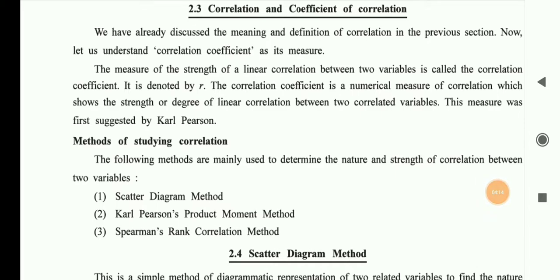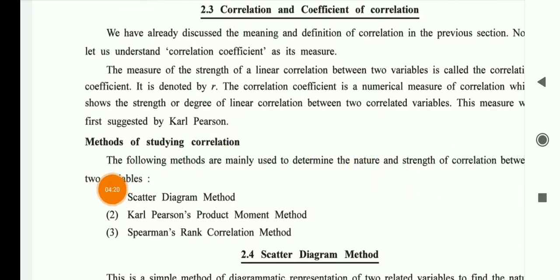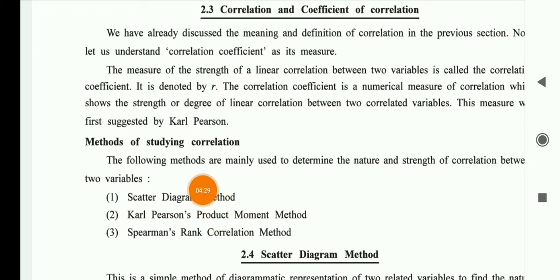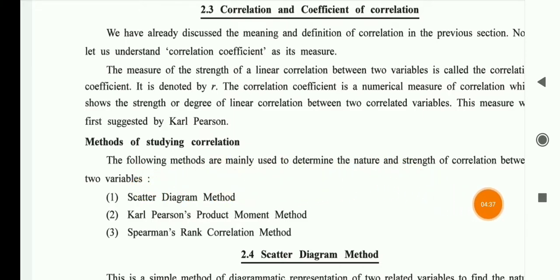Now we will see some methods to find correlation. In this chapter we study three types of methods: the Scatter Diagram Method, the Karl Pearson Method, and the Spearman Rank Correlation Method. In the Scatter Diagram Method, we understand the correlation between two variables by drawing a diagram and plotting the data, from which we can determine the type of correlation.